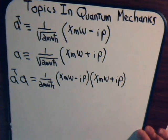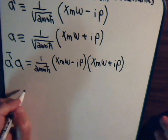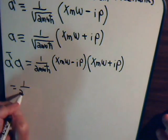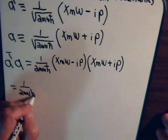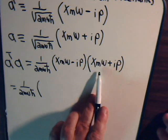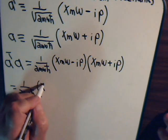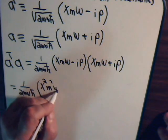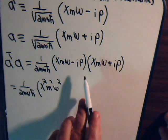So, this will give us, and then, we'll multiply this times this. That's x squared, m squared, omega squared.